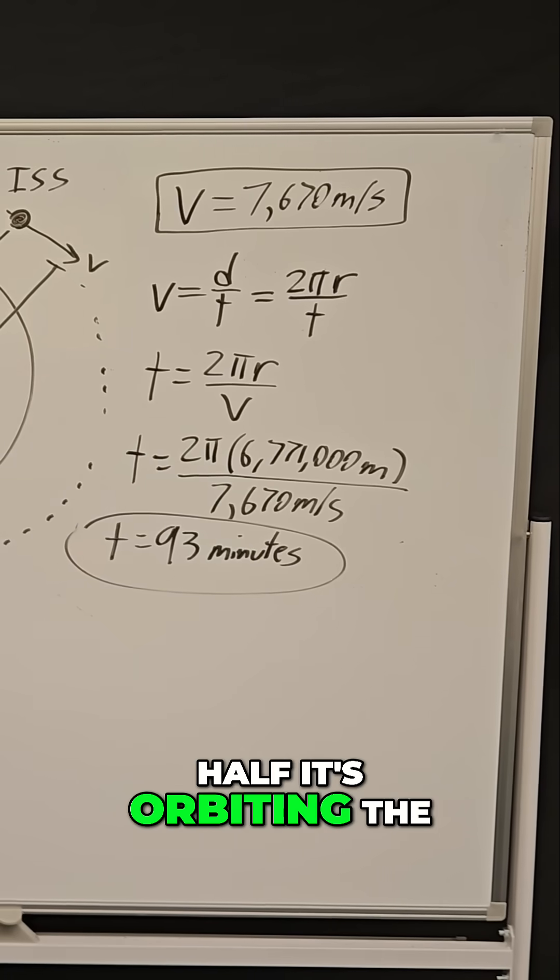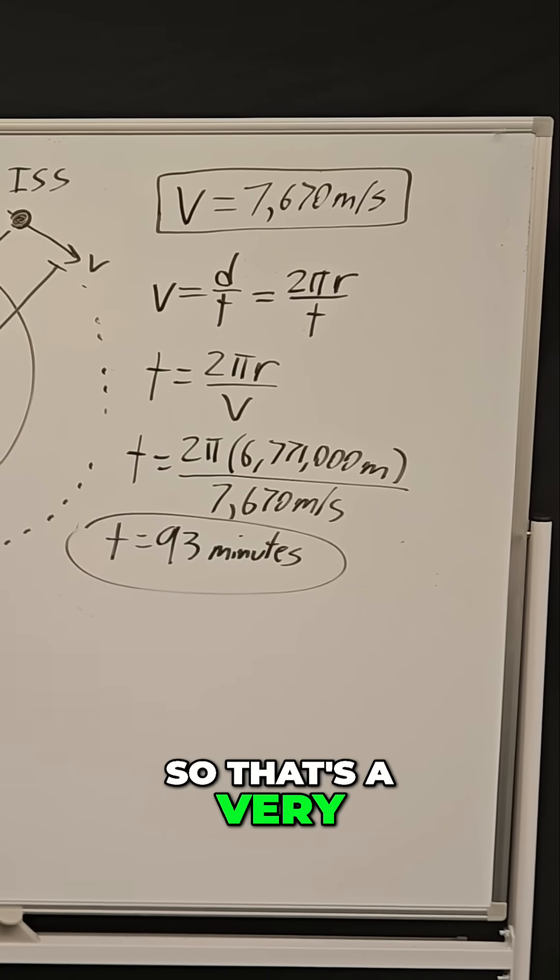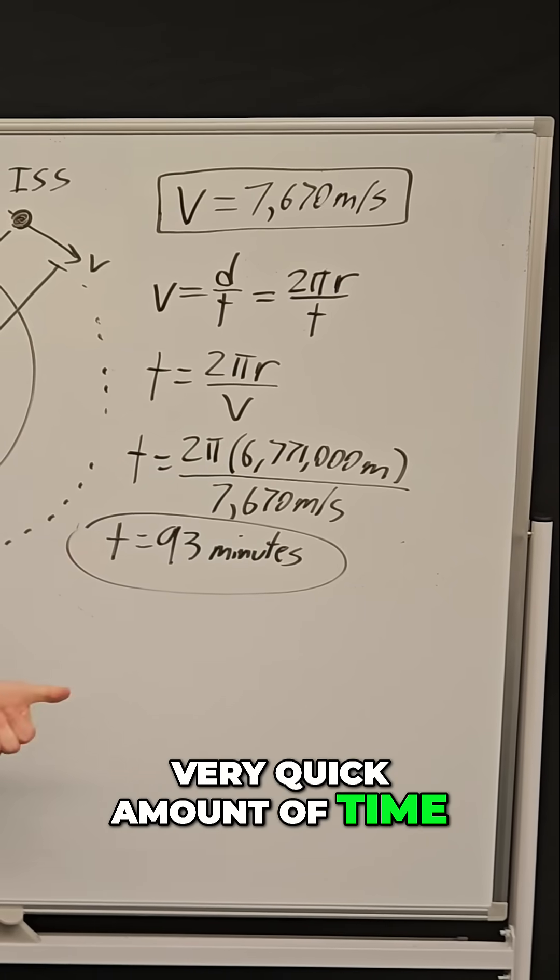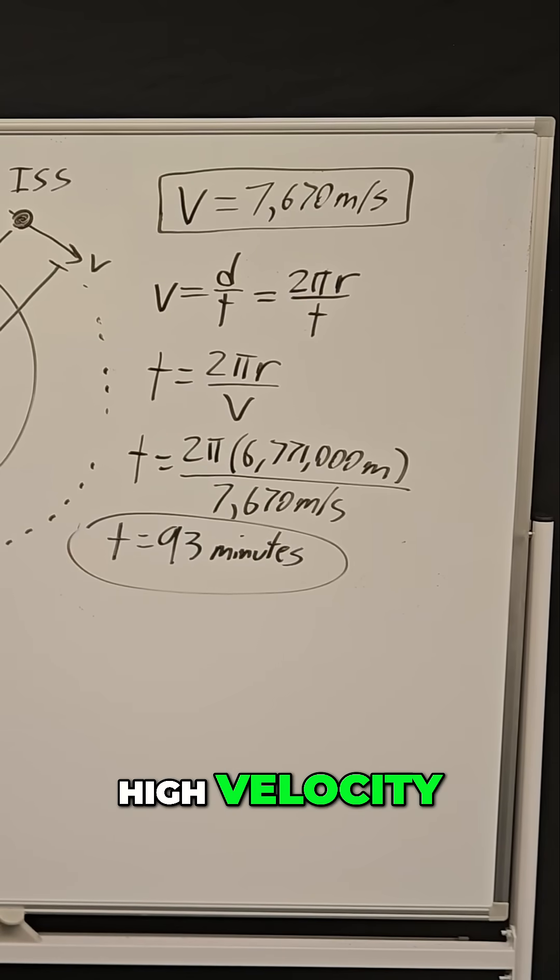Every hour and a half, it's orbiting the Earth again. That's a very quick amount of time, and that's due to the fact that it's moving at a very high velocity.